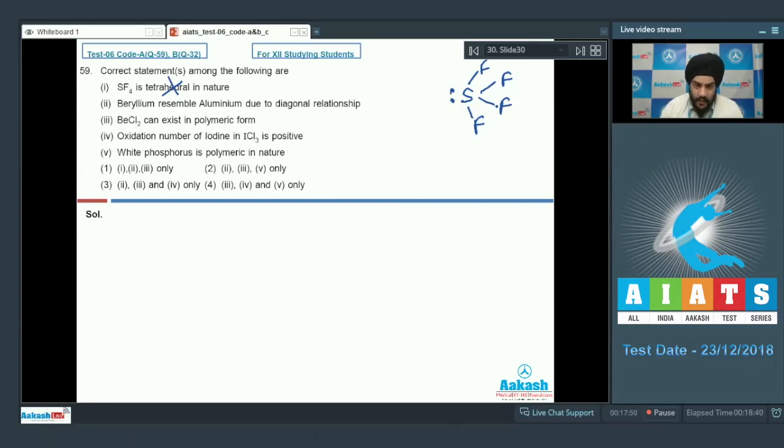Statement 2: beryllium resembles aluminum due to diagonal relationship - this is correct. Statement 3: BeCl2 can exist in polymeric form - this is correct. Statement 4: oxidation number of iodine in ICl3 is positive - this is also correct, as iodine is in +3 state.